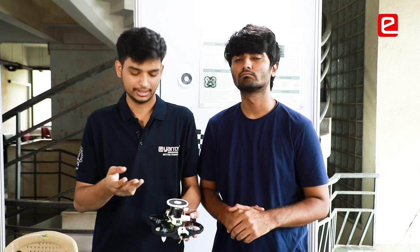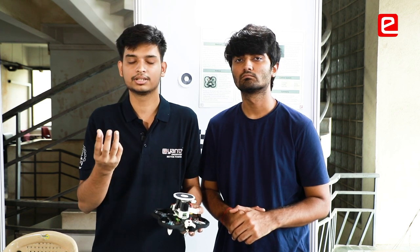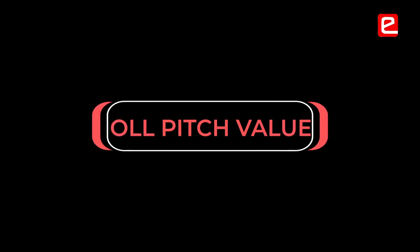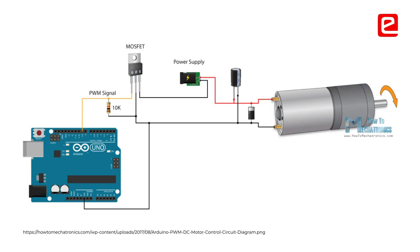The Raspberry Pi computes the throttle, roll, and pitch values and sends them to the flight computer. The flight computer has an internal controller that uses those roll and pitch values to give PWM commands to the motors. That is how the drone moves autonomously inside the indoor environment.